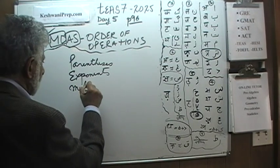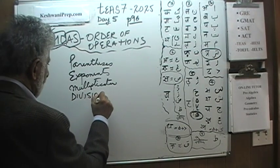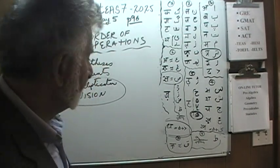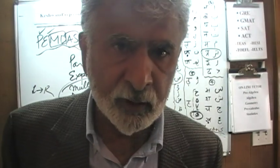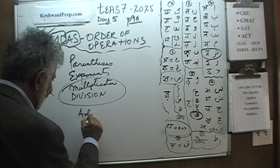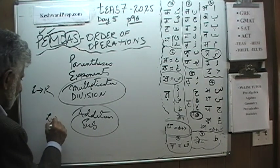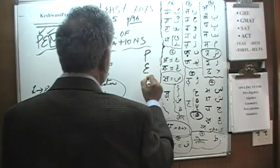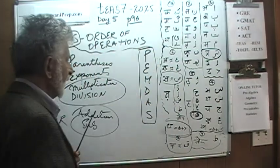Then we do multiplication and division. If they both appear in the given problem, the rule is that we simply move from left to right, whichever comes first. If division comes first, we do division first. If multiplication comes first, we do that first. The same exact thing goes for addition and subtraction — they have the same priority, so we move from left to right. So: parenthesis, exponents, multiplication, division, addition, and subtraction — our mnemonic PEMDAS.